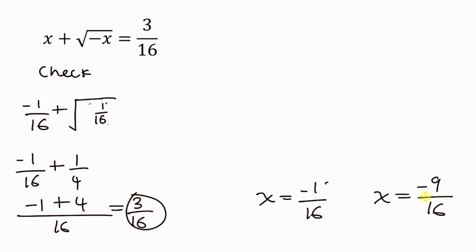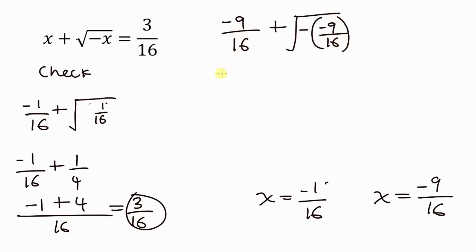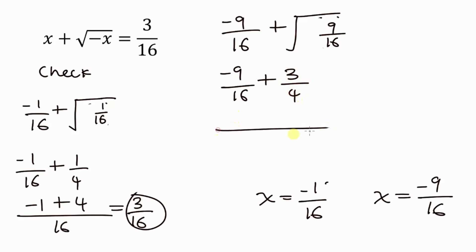Now for x equals negative 9 over 16: we have negative 9 over 16 plus the square root of negative times negative 9 over 16. The negatives make positive inside the square root, so we get the square root of 9 over 16, which is 3 over 4. Taking LCM of 16: negative 9 over 16 plus 12 over 16 gives negative 9 plus 12 equals 3, all over 16. This also checks out.